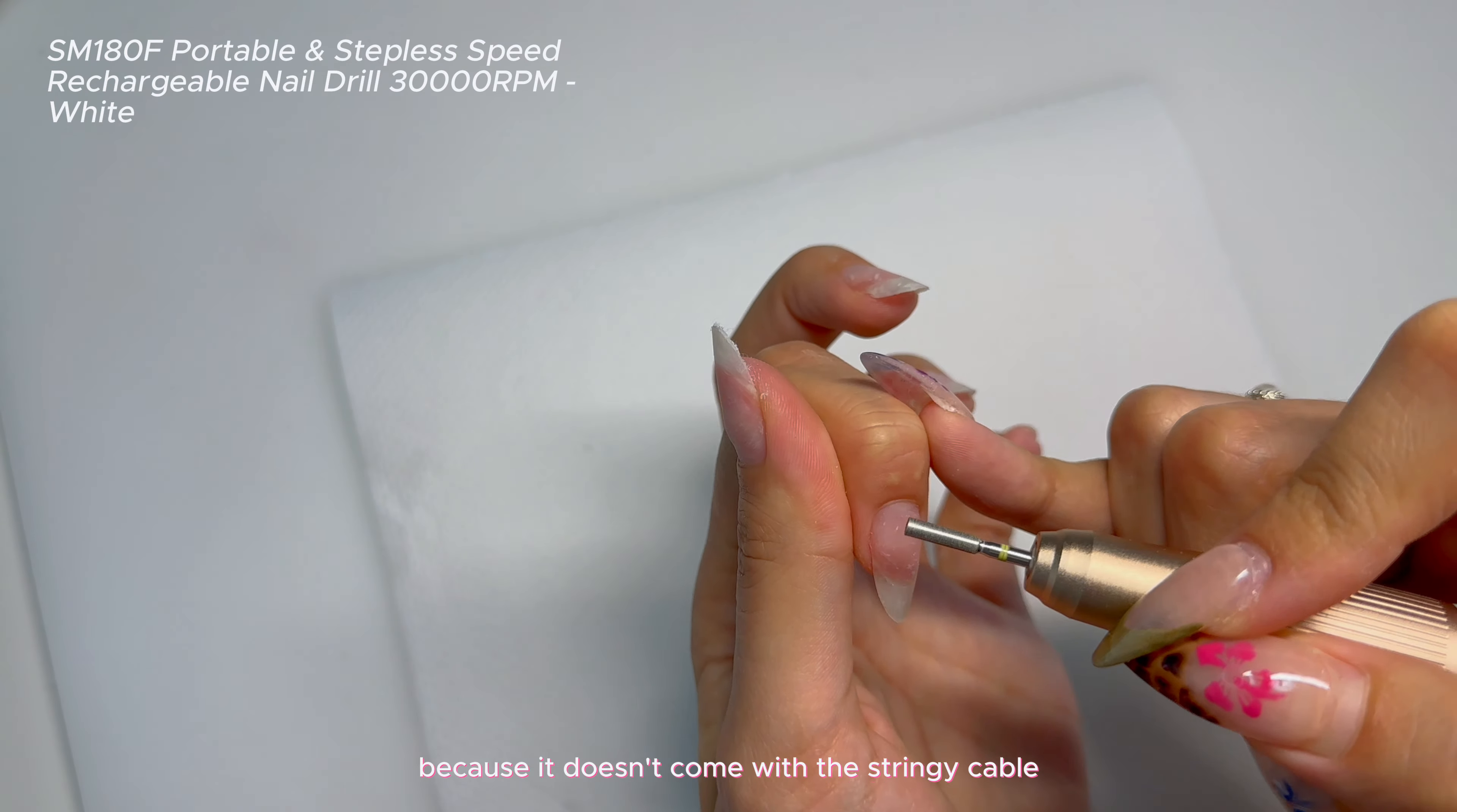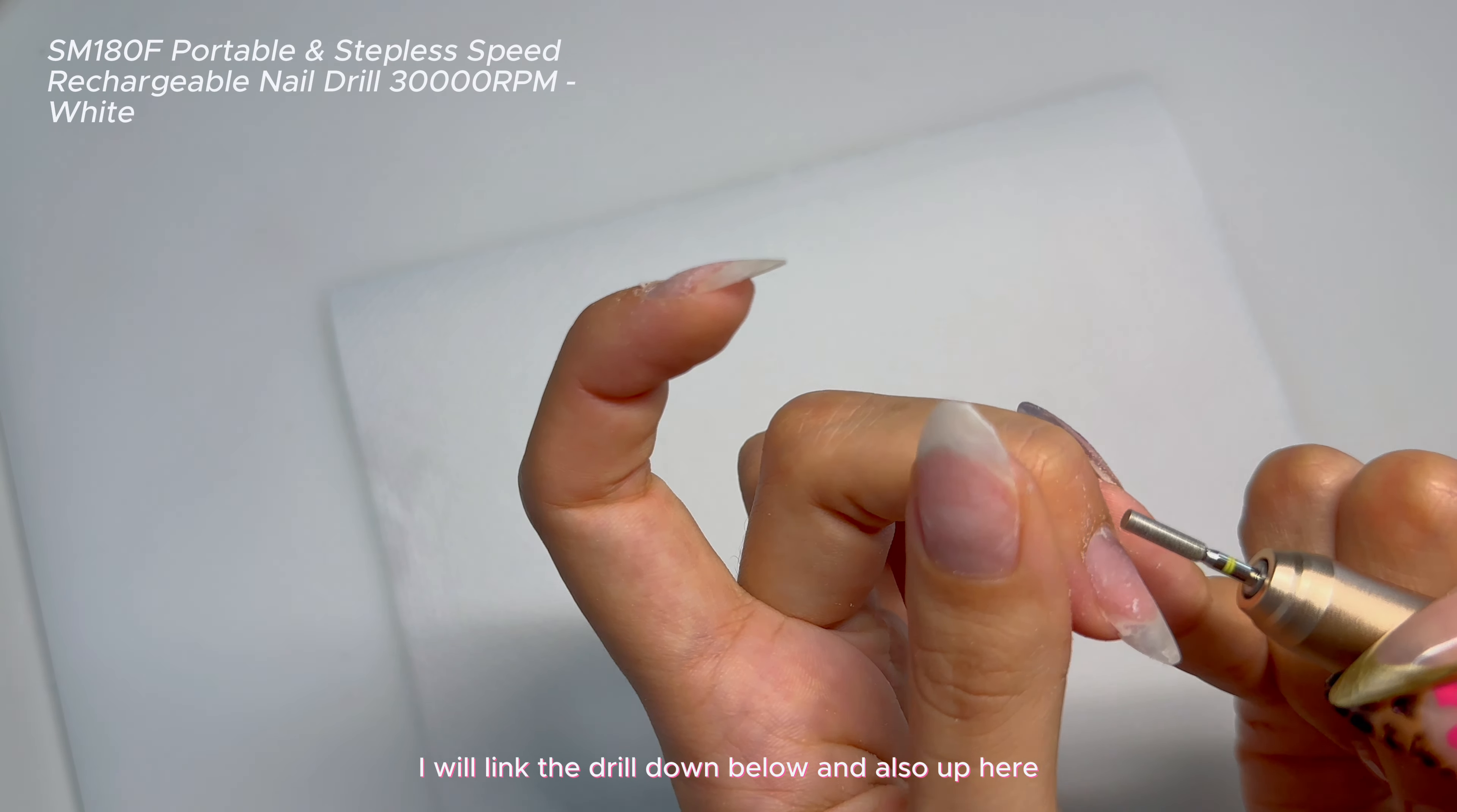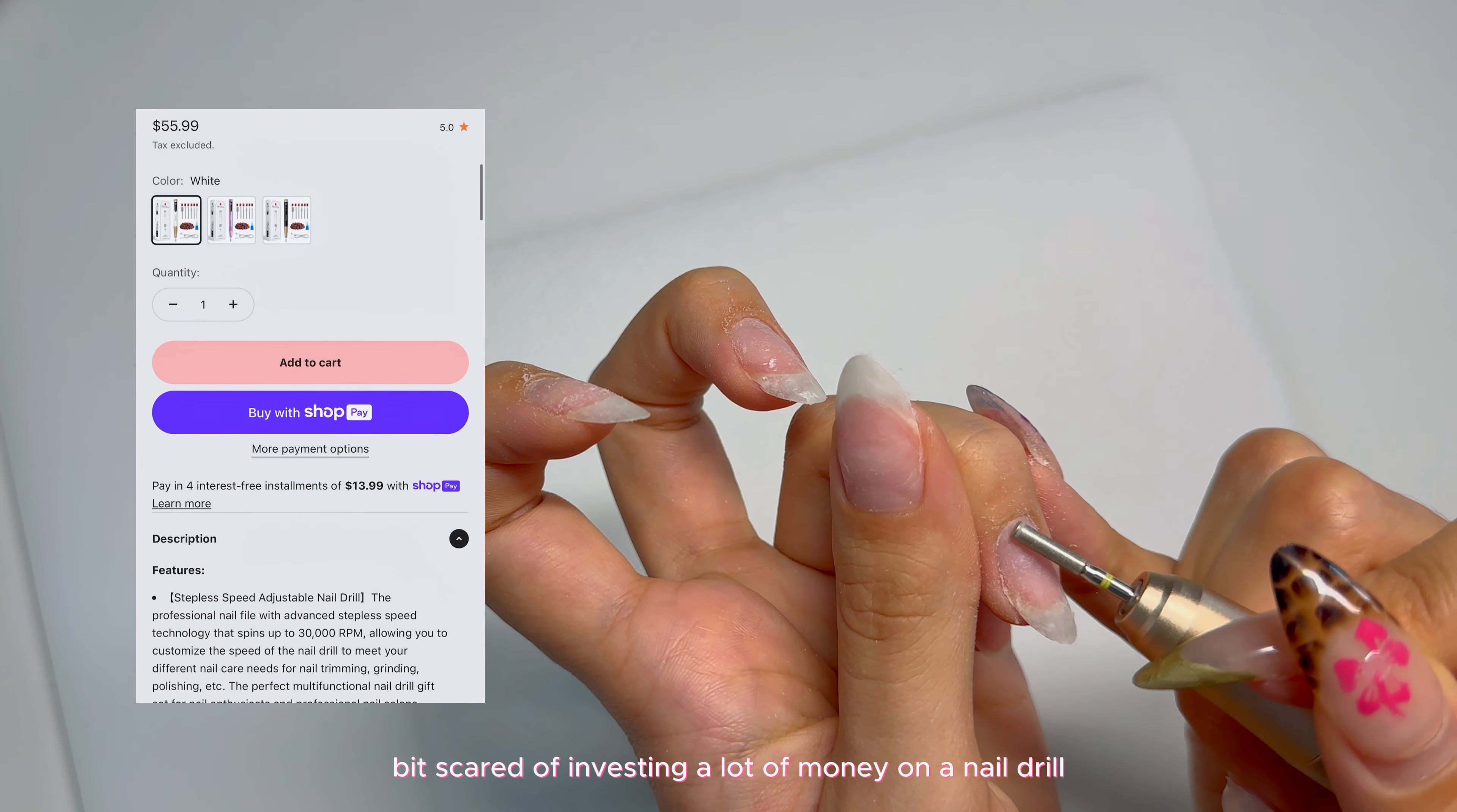Right now, I'm using the Melody Suzy Portable Nail Drill. I am obsessed with this nail drill because it doesn't come with the stringy cable. You can just charge it and use it. I'm also using a cuticle bit, so be gentle when you're doing this step. I will link the drill down below and also up here.